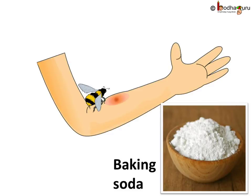Many animals use acid for their self-defense. For example, ant and bee stings inject formic acid. We use a mild base like baking soda on the stung area for relief.